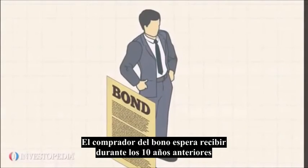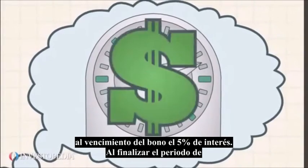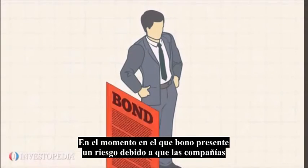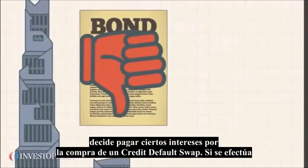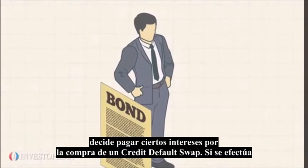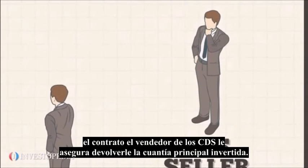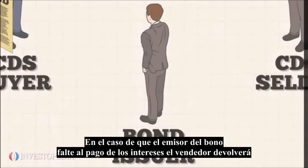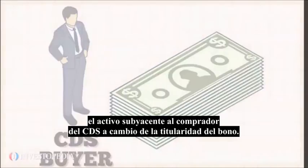The bond buyer has taken a risk by assuming that during the 10 years preceding maturity they will receive 5% interest, and at maturity receive their principal back. Since there is always a chance the bond issuer will default — especially if the bonds were rated low by rating companies such as Standard and Poor's — the bond purchaser may choose to allocate some of the interest toward the purchase of a credit default swap. If they do, the CDS seller will ensure the principal amount and, if the bond issuer defaults, will pay it to the CDS buyer.